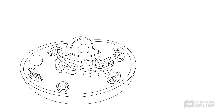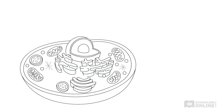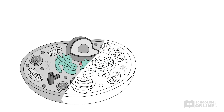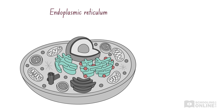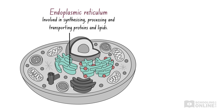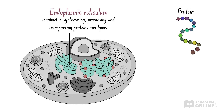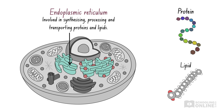Let's peek inside and study some organelles involved in building and processing biological molecules. The endoplasmic reticulum is an organelle involved in synthesising, processing and transporting proteins and lipids. Remember, proteins are made of polypeptides, or long chains of amino acids, while lipids are long hydrocarbon chains, such as fatty acids.